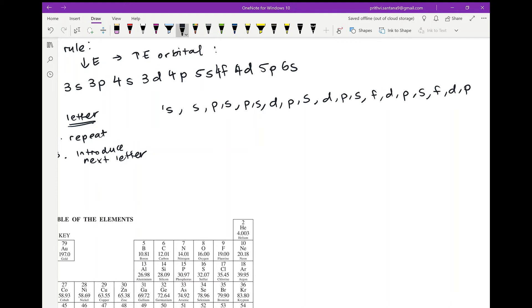So I see S. The S suborbital begins at the first energy level. So I will start at 1s, and then I'll go to 2s, and then 3s, and then 4s, and then 5s, 6s, 7s, and so on.